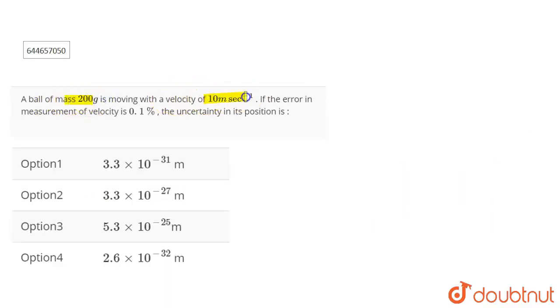mass 200 grams is moving with a velocity of 10 meters per second. If the error in measurement of the velocity is 0.1 percent, the uncertainty in position is. Okay, so the mass of the ball is given to you